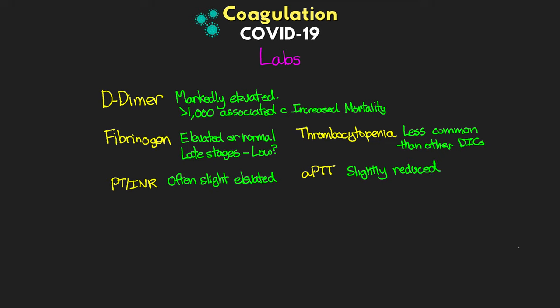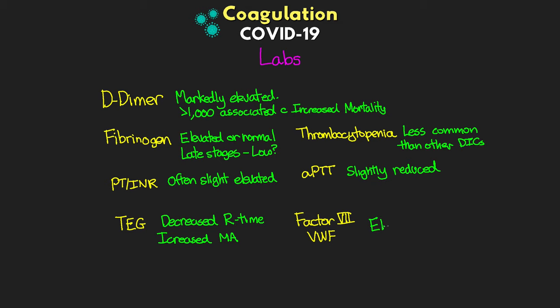TEG is another valuable lab — we want to look for a decrease in R time as well as an increase in maximum amplitude (MA), which can indicate elevated fibrinogen and platelet function. Finally, keep an eye on factor 7 and von Willebrand's factor, as we're also seeing elevations in these. Those are the key labs indicative of coagulopathies in these patients.